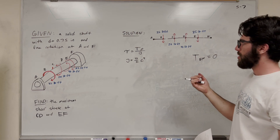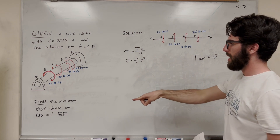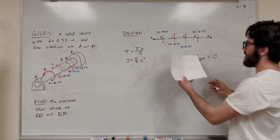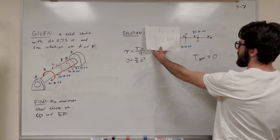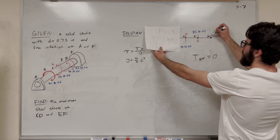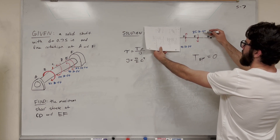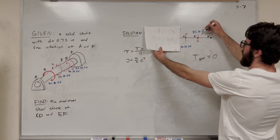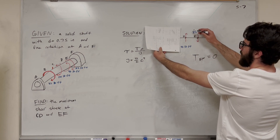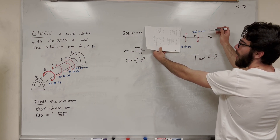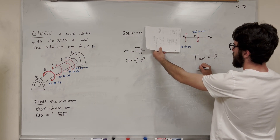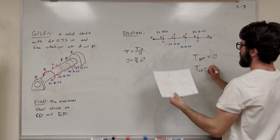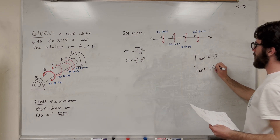So then let's see what the internal torque between C and D is. Let's take a cut in between C and D — so now we're just looking at this. We have negative 25 plus 40. So if you take 25 down plus 40, we're going to have positive 15. So torque between C and D is equal to 15 pound-feet.